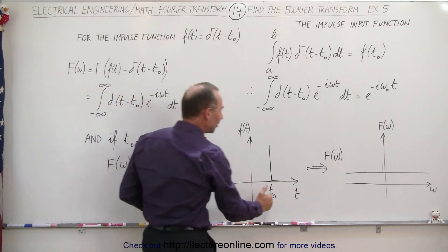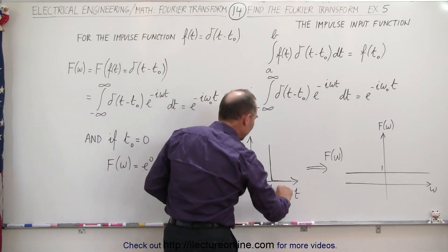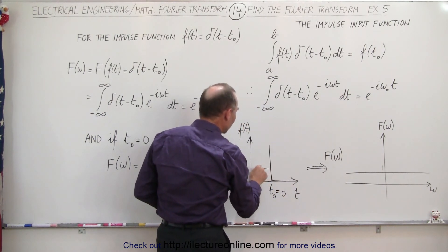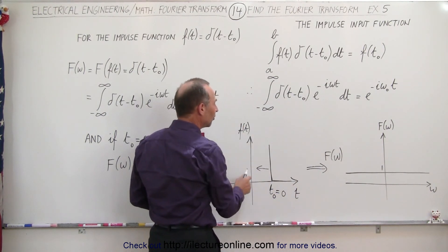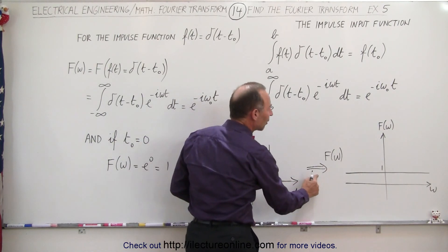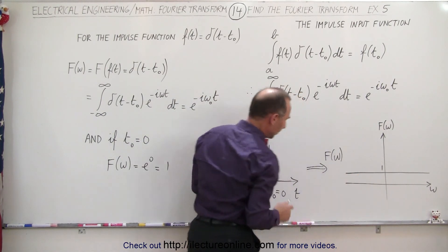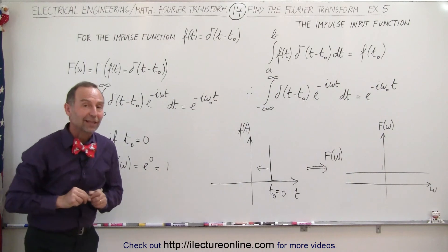And so, if we then center t sub-naught, if we make that equal to 0, when we move this pulse over to the vertical axis, then the Fourier transform becomes equal to 1, and that's how we know that that is true.